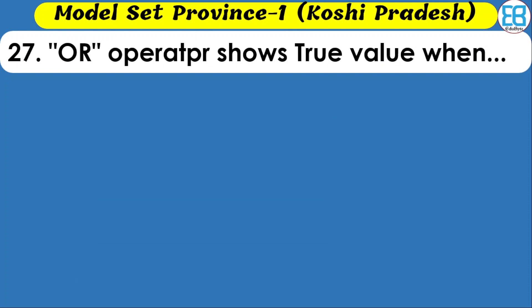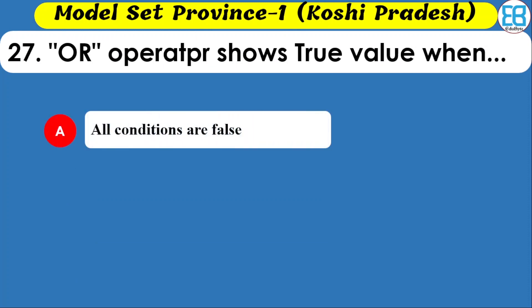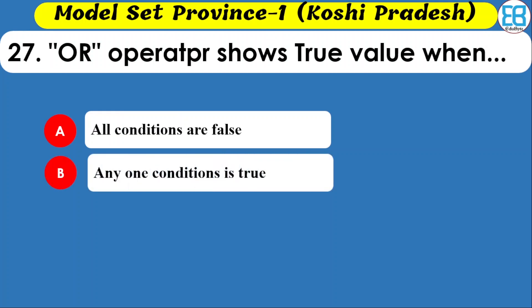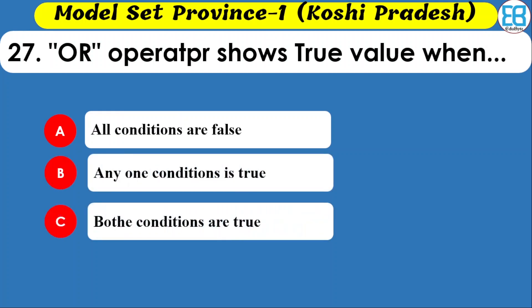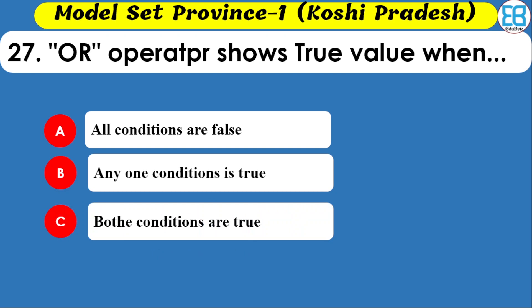The OR operator returns true under which condition? Options are when all conditions are false, when any condition is true, when no condition is met, and when both conditions are true. The correct option is when any condition is true.